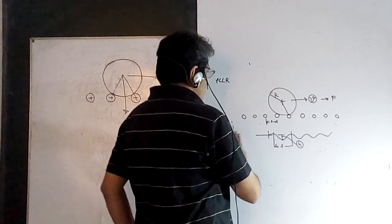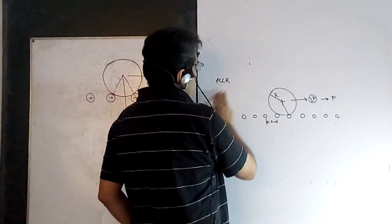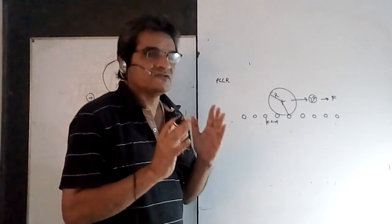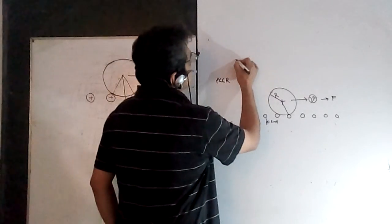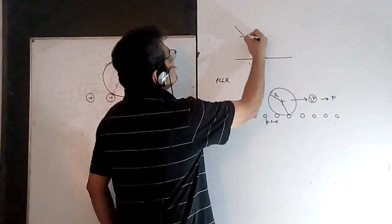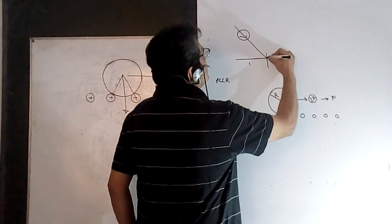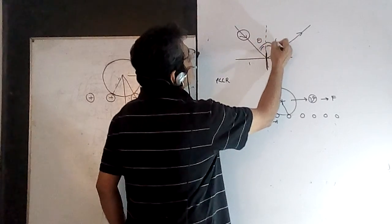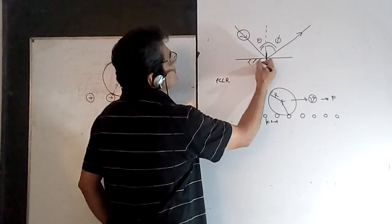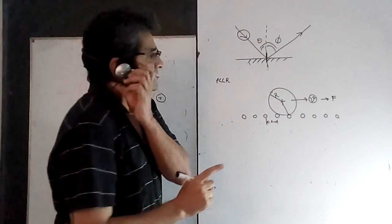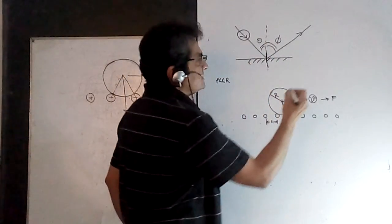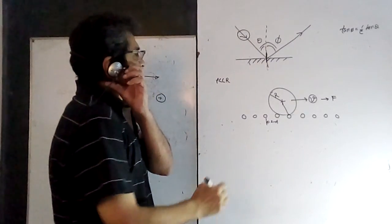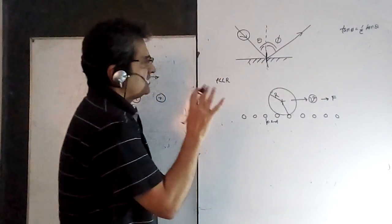Now, how much energy is lost? There is an interesting relationship between the energy lost and the direction in which the impact is inelastic. Consider a case where a spherical object strikes a wall at an angle theta but rebounds at angle phi because the coefficient of restitution e is not 1. It will not rebound at the same angle; phi will be greater than theta, and the formula tan(phi) = (1/e)·tan(theta) has already been derived in another lecture.